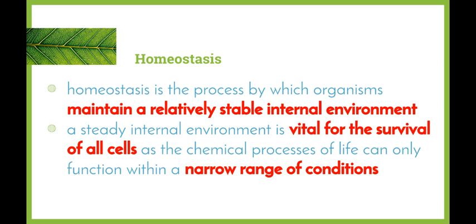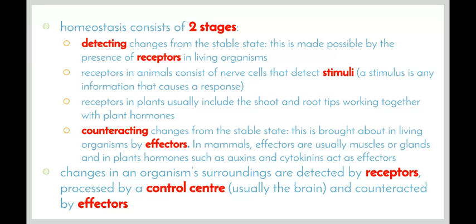The cause is if we have a change in the narrow range of conditions, and the effect is that the organism is unable to maintain their relative state, and therefore survival of the cells is impaired. Homeostasis consists of two stages. Firstly, we need to be able to detect changes from the stable state. This is made possible by the presence of receptors in living organisms. Receptors in animals consist of nerve cells that detect stimuli, and the stimulus is any information that brings about a response.